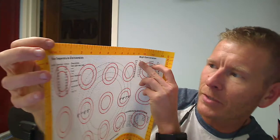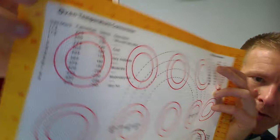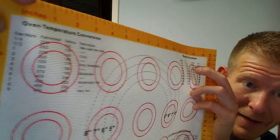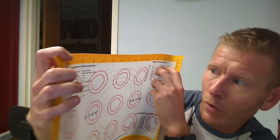It has oven temperature conversions, even like gas marks. We have a gas oven, it can tell you like what a quarter turn equals in how many Fahrenheit. That's awesome.